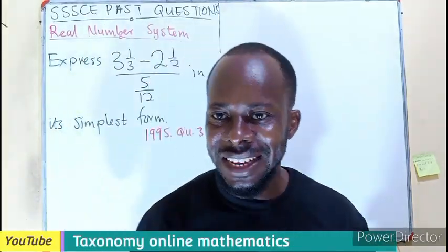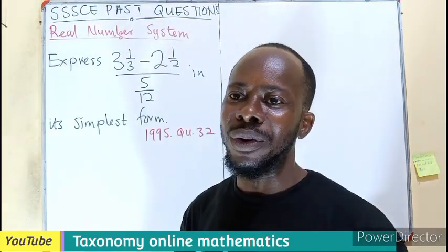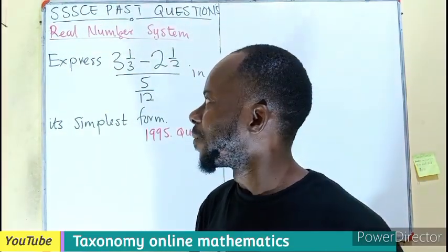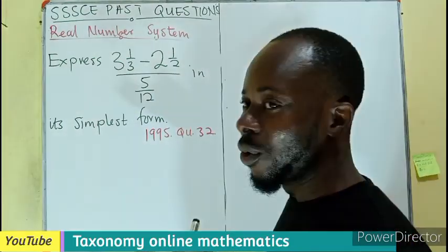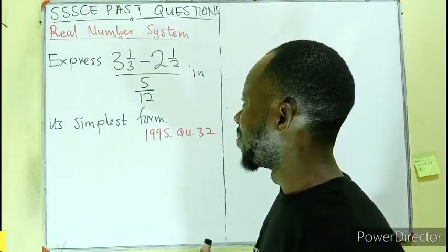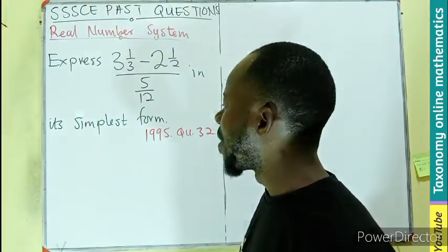Hello, welcome to 1995 question 32 revision on real number system. Join me as we provide the answer to this. We are to express 3⅓ minus 2½ all divided by 5 divided by 12.